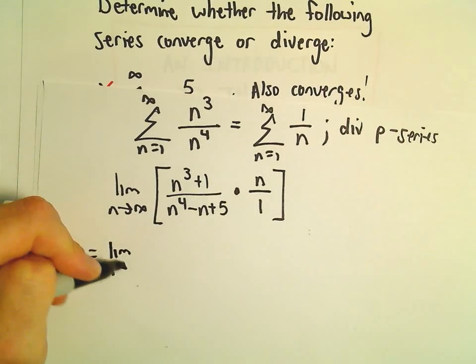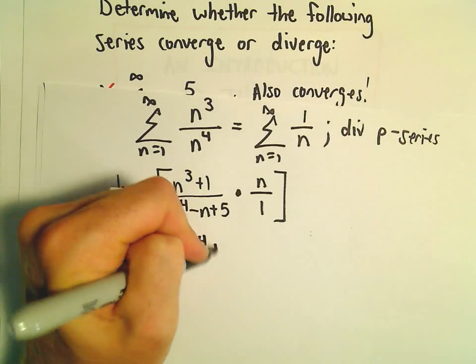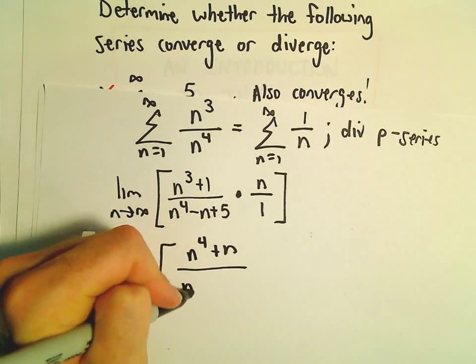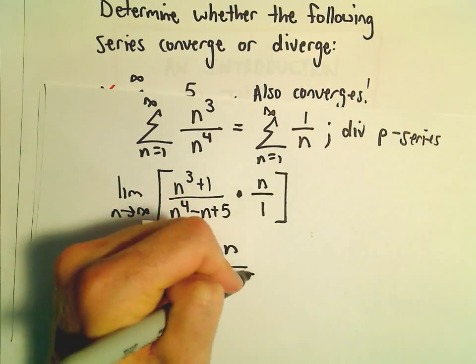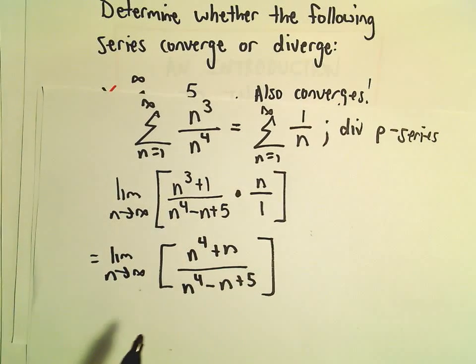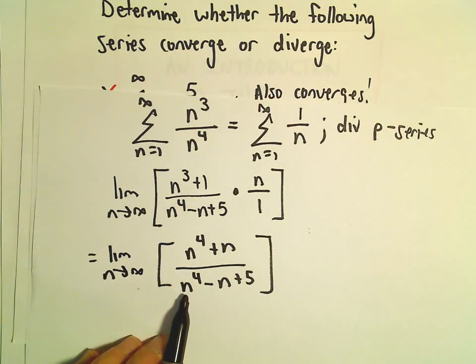Well, this one's not too bad. In the numerator, we have n to the 4th plus n. In the denominator, nothing really changes. But again, now the degree of the numerator equals the degree of the denominator.